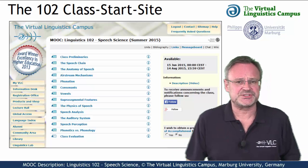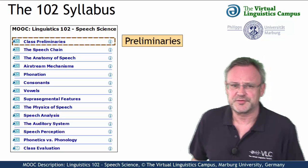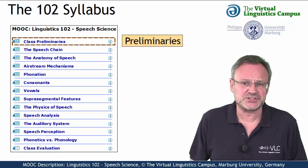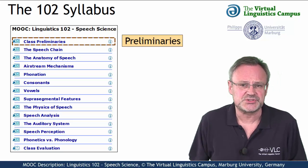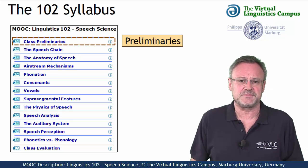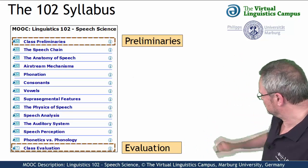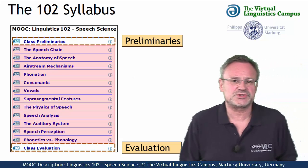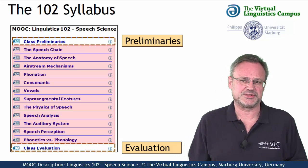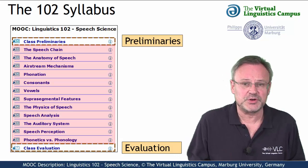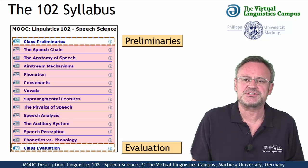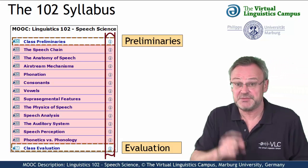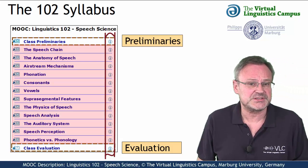The class consists of 14 units, where the first one, the class preliminaries, informs you about some general aspects of the class and discusses what it means to study online on the VLC. The last one is your option to evaluate the class. The remaining units exhibit the content of this class. And if you wish, you can retrieve an overview of each unit's content by clicking on these information symbols, even if you're not logged in or if the class is inactive.